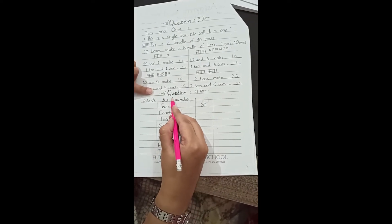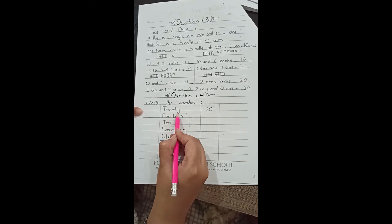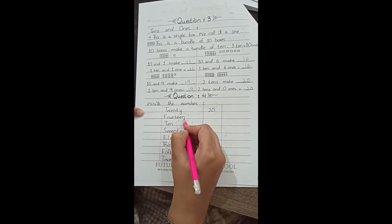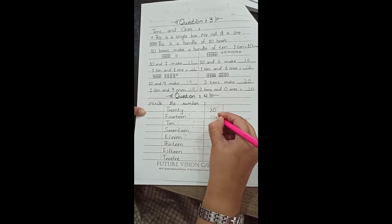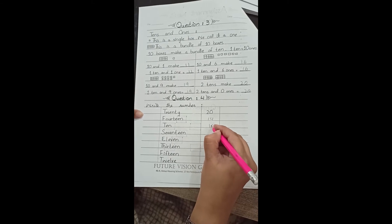Now moving toward question number 4: write the numbers. Twenty, 20. Fourteen: 1 and 4, 14. Ten: 1 and 0, 10.